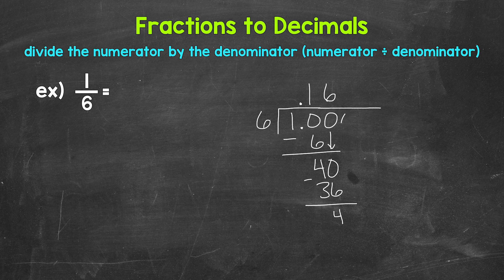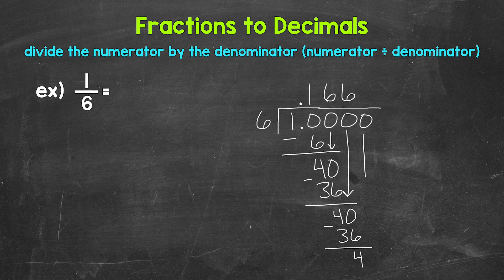So we get 4 again. So we need to use another zero that we can bring down. And we have 40 again. So 40 divided by 6, which is 6. 6 times 6, 36. Subtract. 40 minus 36 is 4. We can use another zero and bring that down to continue on.